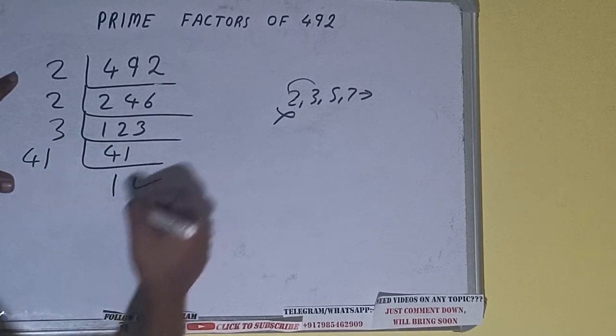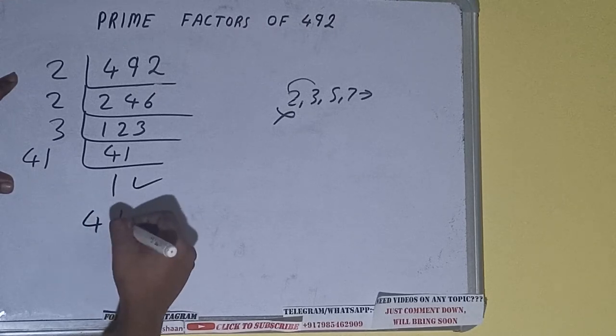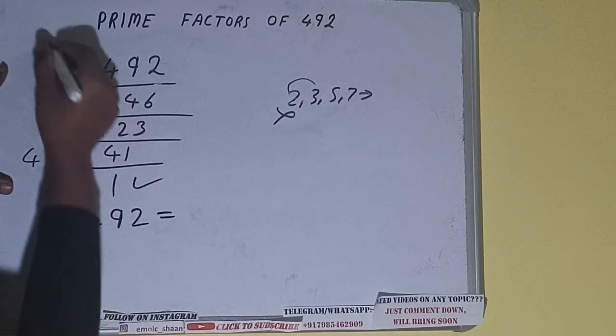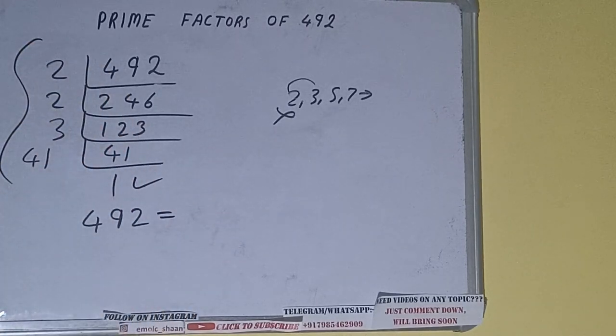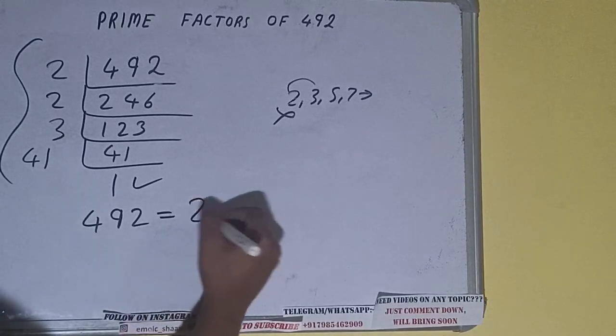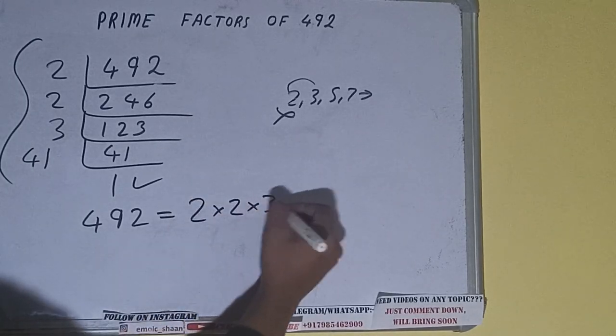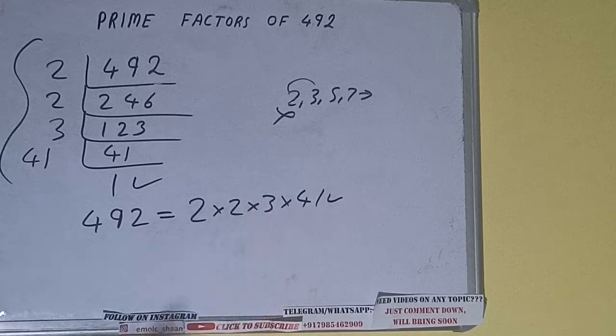Once we get 1, we need to stop and do one last thing. That is, prime factors of 492 equals multiply whatever we have on the left-hand side: 2 × 2 × 3 × 41. That will be the answer.